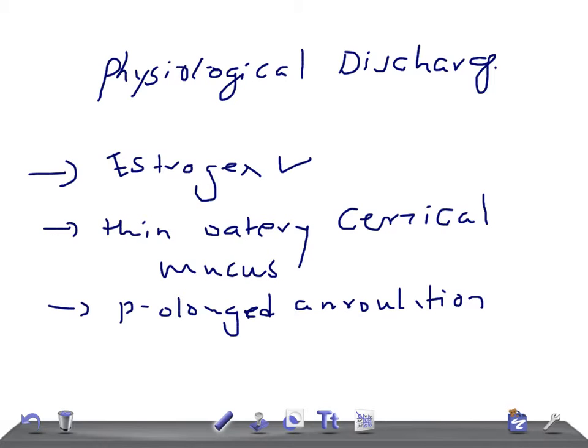The risk factors for developing this physiological discharge include chronic anovulation conditions such as PCOS - polycystic ovarian syndrome. That is a really important topic for USMLE and medical students. I'm going to discuss and upload a video on that later. The risk factor for this physiological discharge is PCOS, a chronic anovulatory condition.